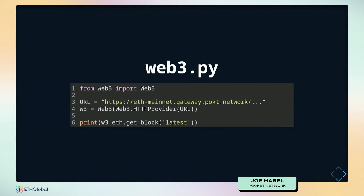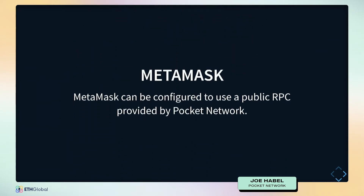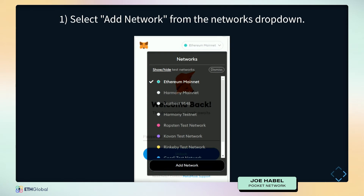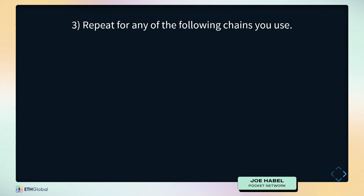Using Pocket in Python looks really similar — just drop that URL in and you're ready to roll. You can also use it in ways beyond DApp development. MetaMask gives people the option to use their own RPC, and Pocket Network provides a variety of public RPCs for people to use. Go to MetaMask in your networks, choose to add a network, give it a name, and use the Pocket public RPC. Now your MetaMask is also decentralized — so if Infura goes down, you still have access through MetaMask.